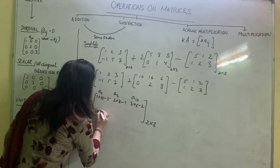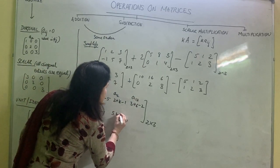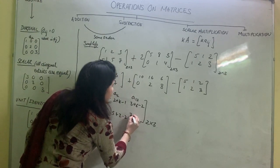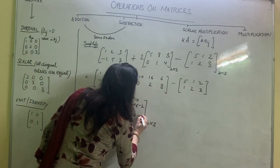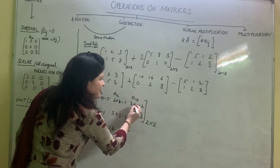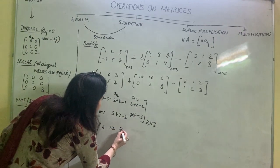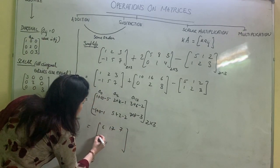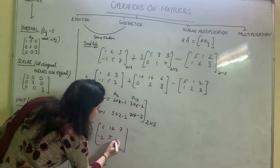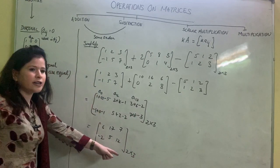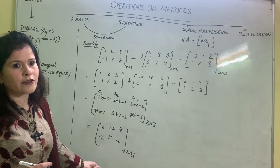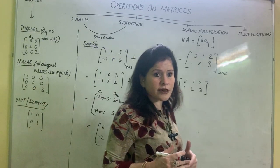Simplifying: a11 = 1+10-5 = 6; a12 = 2+16-1 = 17; a13 = 3+6-2 = 7; a21 = -1+0-1 = -2; a22 = 5+2-2 = 5; a23 = 7+8-3 = 12. The resultant is a two-cross-three matrix. If you are adding or subtracting two-cross-three matrices, the resultant is also two-cross-three.